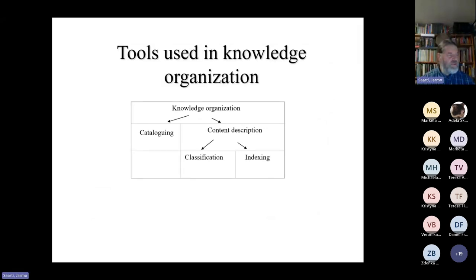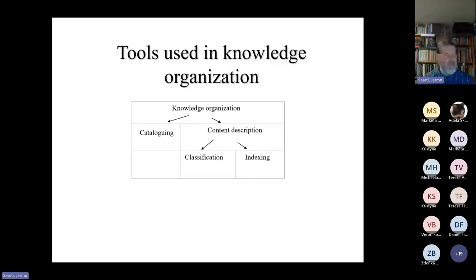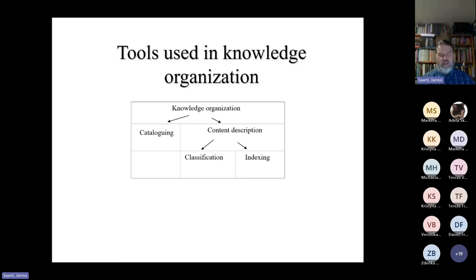Here's a figure of this totality. We have knowledge organization that is divided into cataloging and content description, and content description is divided into classification and indexing. This can be done by computers, by humans, or by both. The upcoming artificial intelligence tools will probably change this quite a lot, because especially within scientific documents these tools are already used and available. But what makes it very interesting in fiction is that fiction has an element that is always subjective both for the author and the reader, and I don't think that computers can ever fully do that — but we will see what will happen in the future.